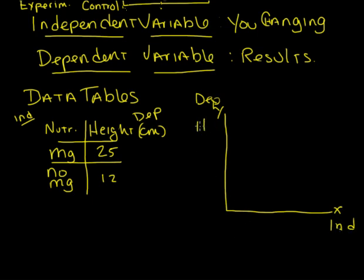So on the y axis. Height. And centimeters. Down here. Nutrients. Put miracle grow. No miracle grow.